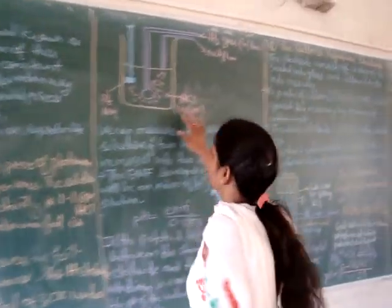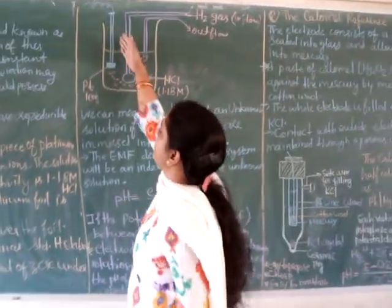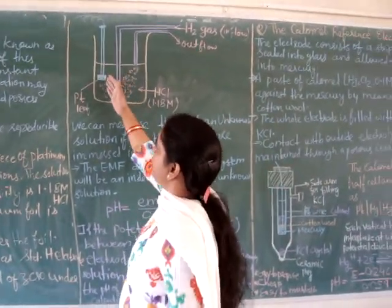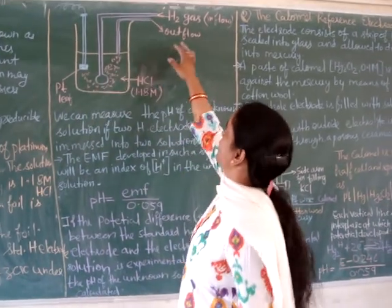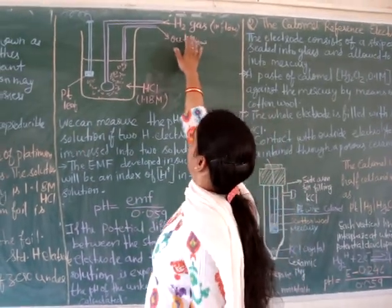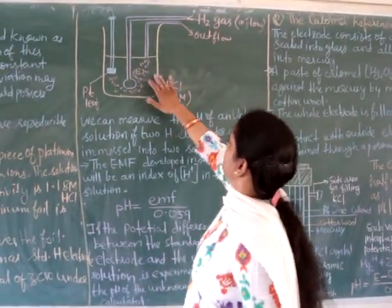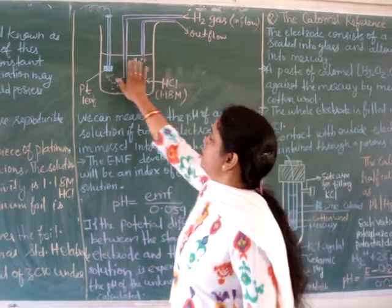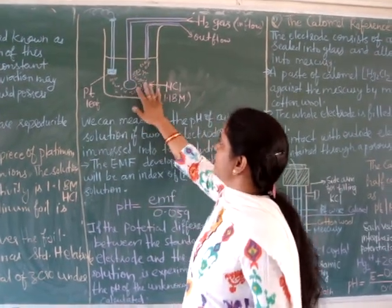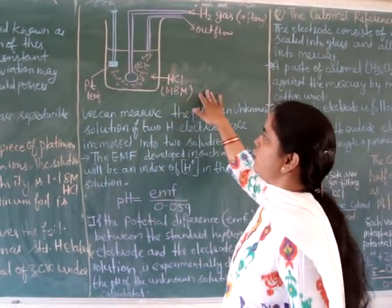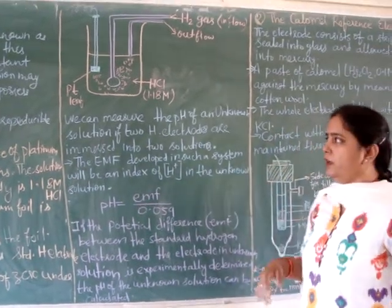Here is the diagram for the hydrogen electrode. You can see here this is the platinum foil or leaf that is coated with platinum black. Here this is the inflow of hydrogen gas and this is the outflow for gas. The solution present is hydrogen chloride that is of 1.18 molar.